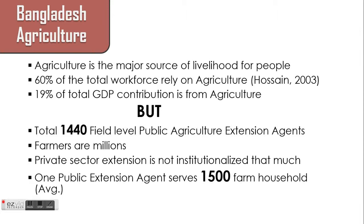Bangladesh agriculture is a major source of livelihood for the people of Bangladesh, where 60% of the total population really depend upon agriculture and 19% of total GDP contribution is coming from agriculture. But interestingly, the Department of Agriculture Extension, which is the public extension department, has only 1,440 field-level extension agents for these millions of farmers. So one extension agent has to serve 1,500 farmhouses in its jurisdiction. Quite surprising.